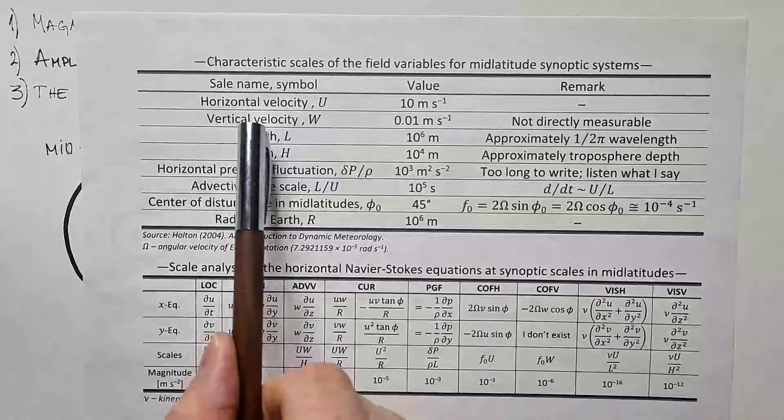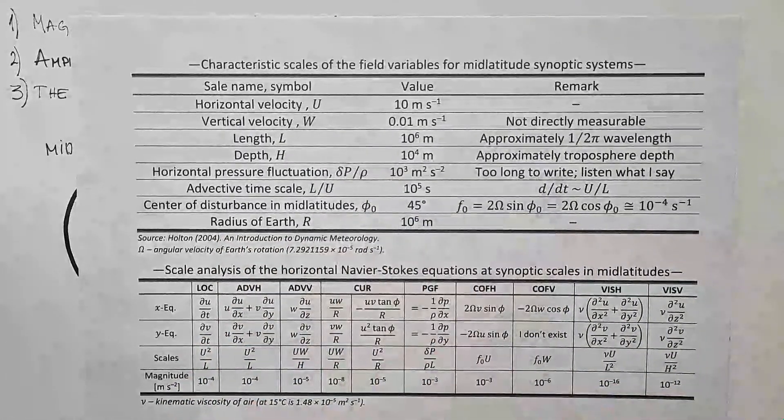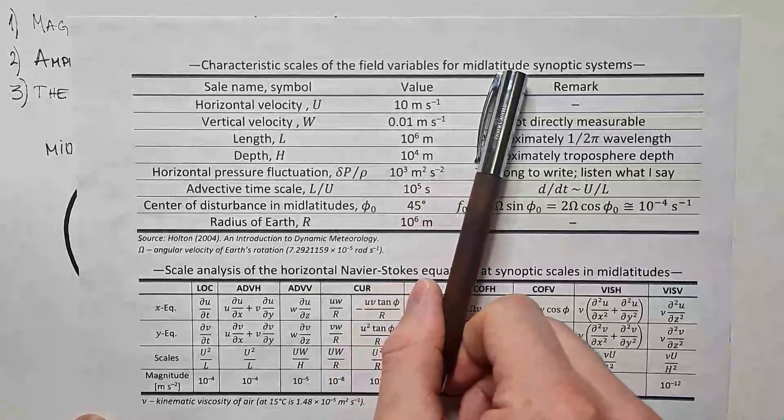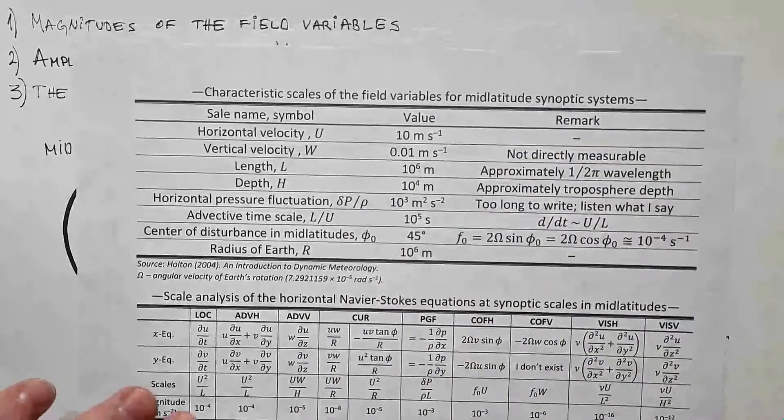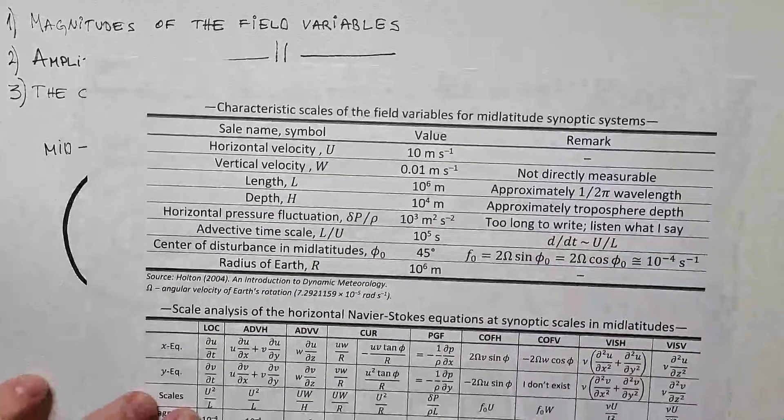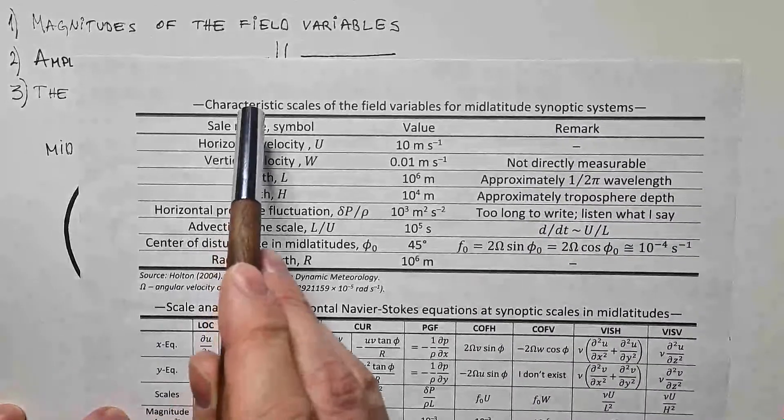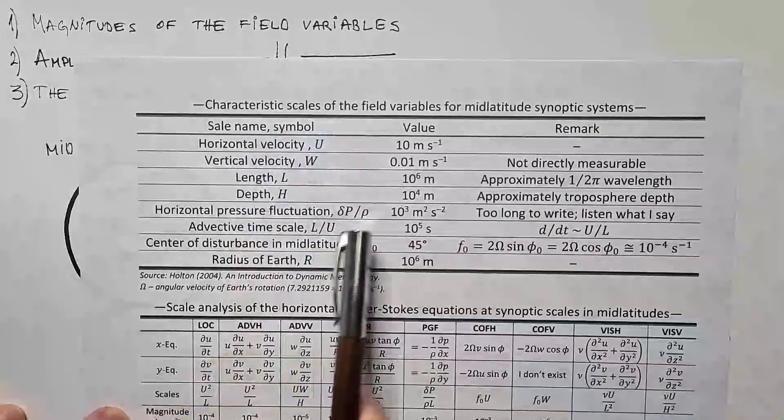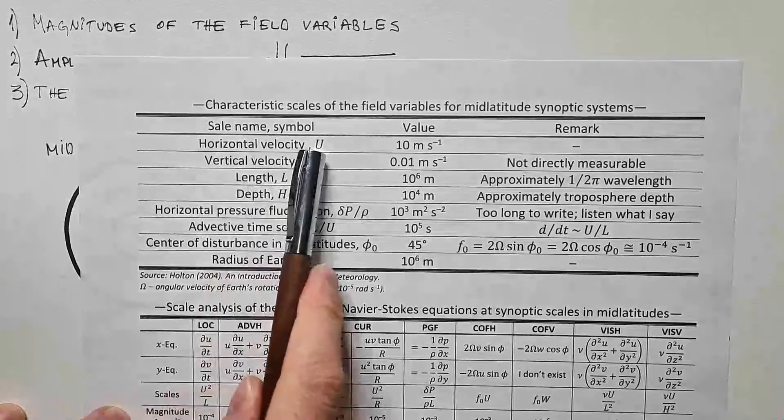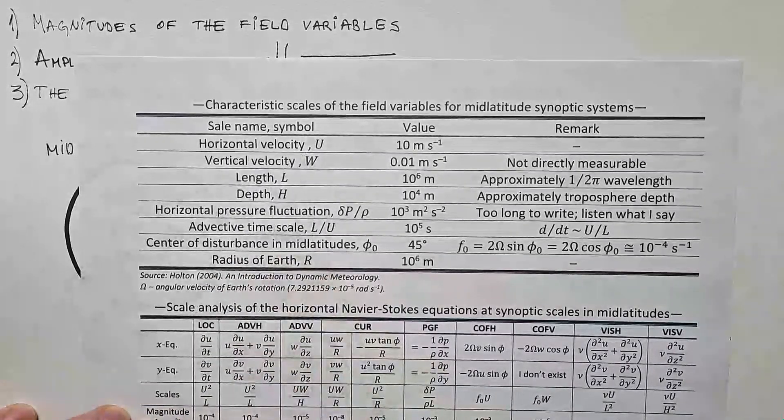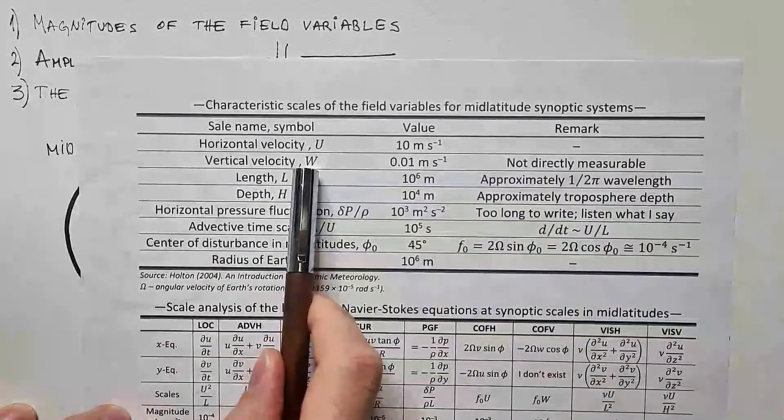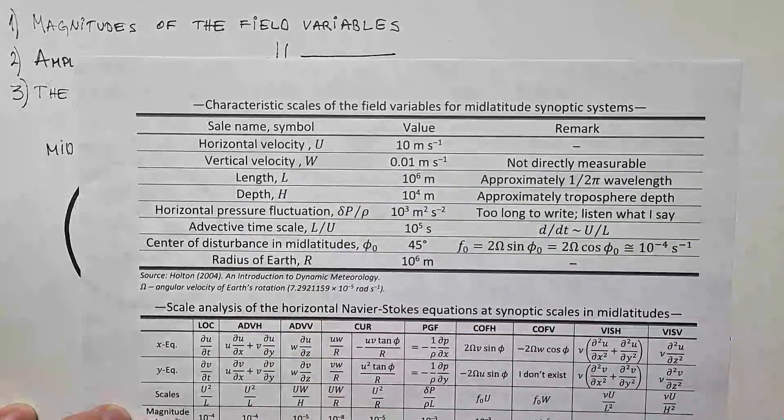So let's first analyze this table over here. This table gives us characteristic scales of the field variables for mid-latitude synoptic systems. And remember, we have to know these from previous video. We have to know these characteristic values in order to be able to carry out scaling. So the first column is the scale name and symbol, then characteristic value, and then certain remarks that I have. Horizontal velocity, I just argued from this synoptic chart, that it's order of magnitude 10 m per second.